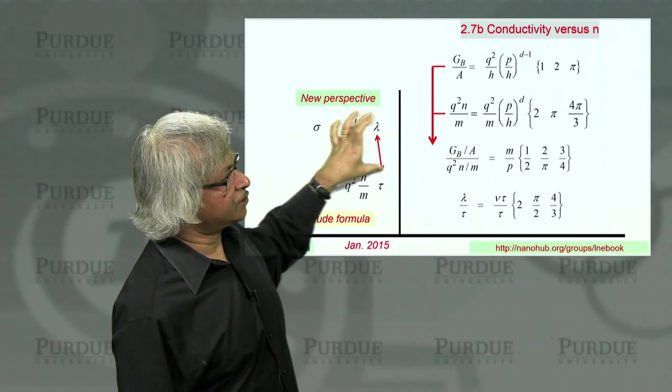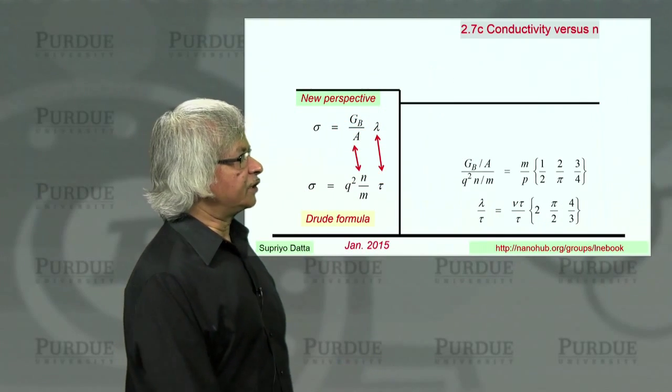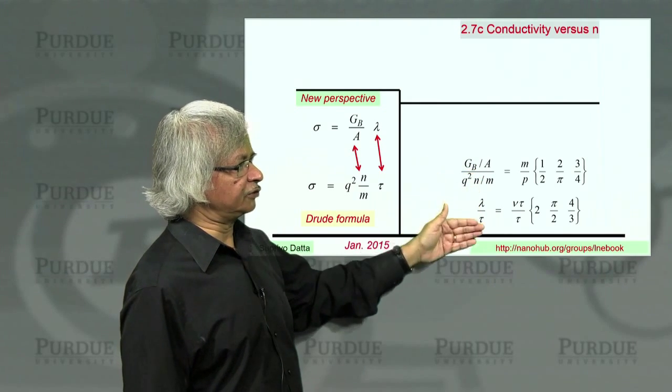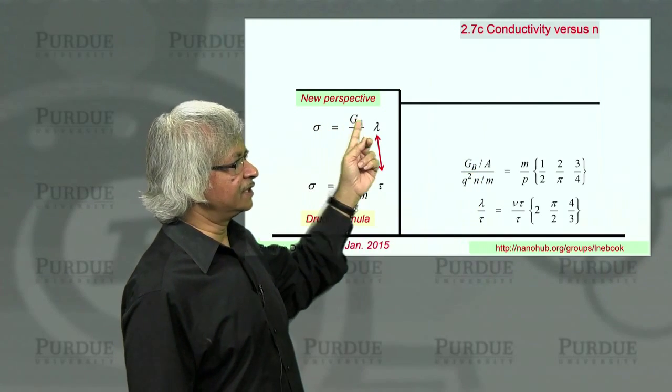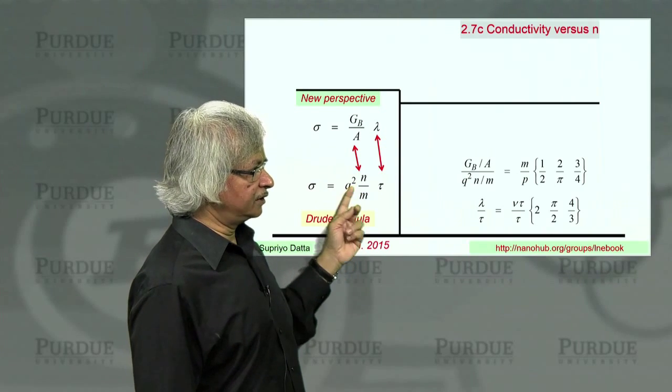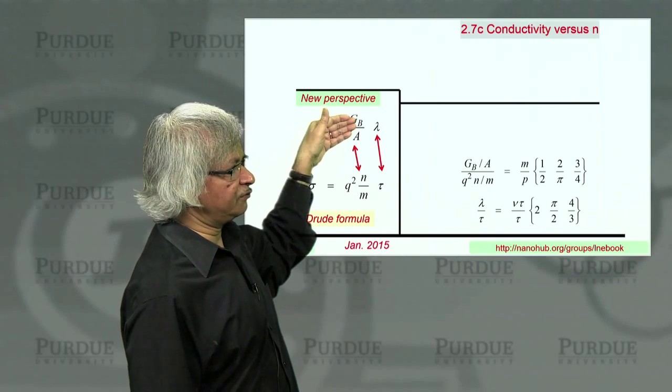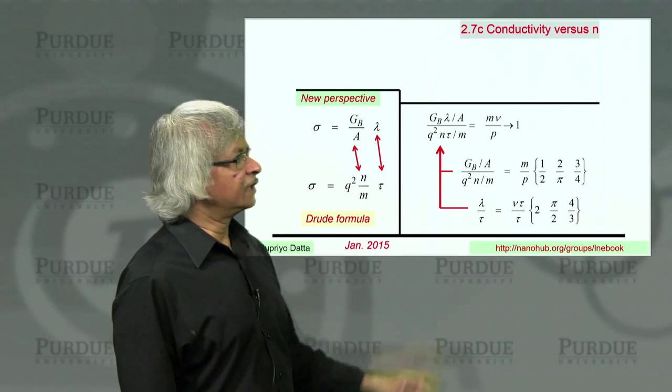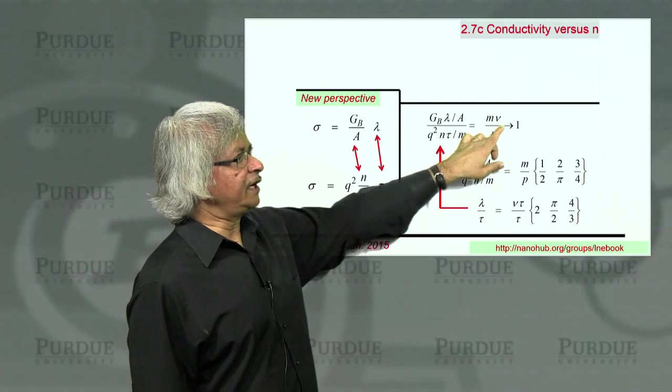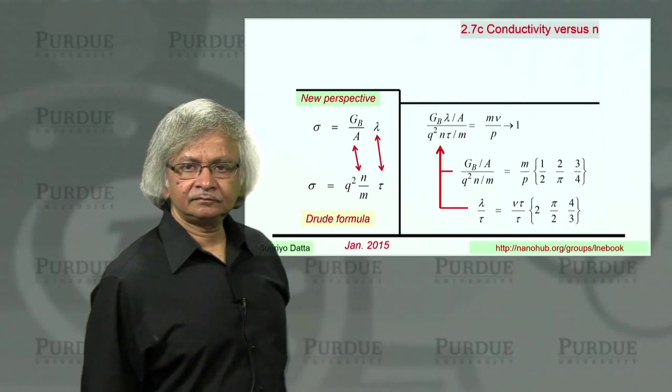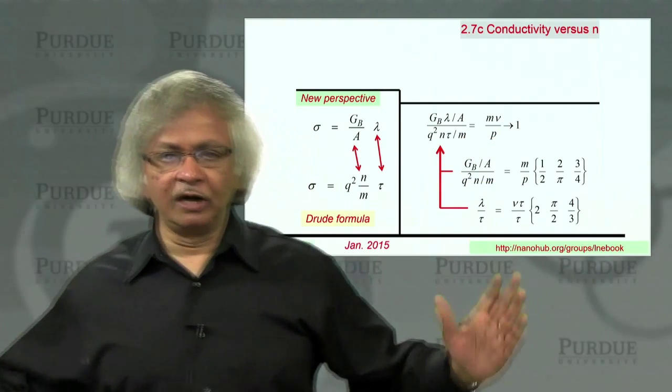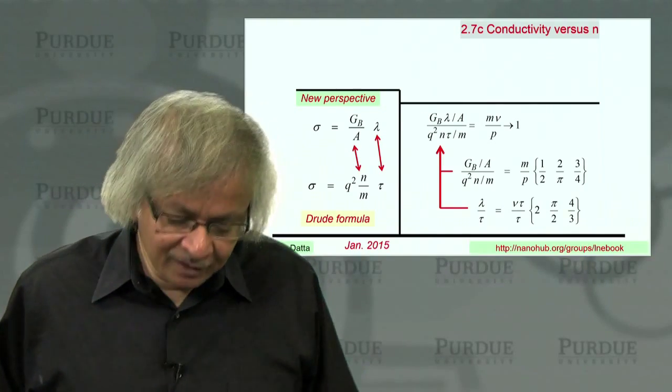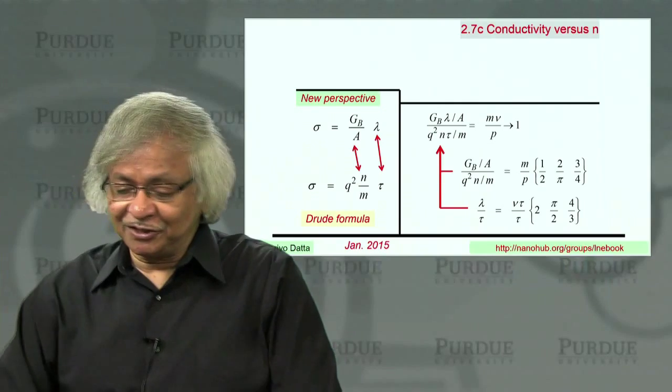That is the ratio of this part to this part. That is the ratio of this part to that part. So if you collect those two things together, now what we want is the product of the two. Because conductivity is this times this or this times this. And we have a ratio of this to this and a ratio of that to that. So you could take the product. And what you'd find is you get MV over P. And you say, well, that's one. After all, P, momentum is M times V.